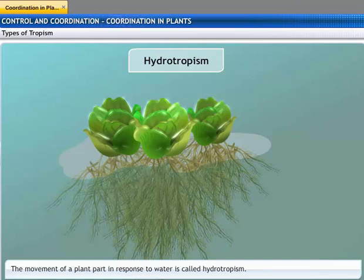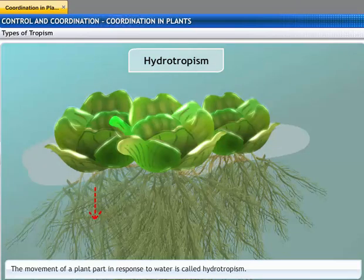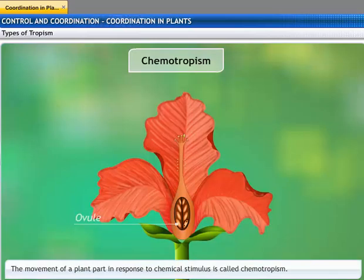Hydrotropism is another growth response in which the direction is determined by the stimulus of water. Chemotropism is movement caused by a chemical stimulus — the growth of pollen tubes towards ovules is an example of this type of tropism.